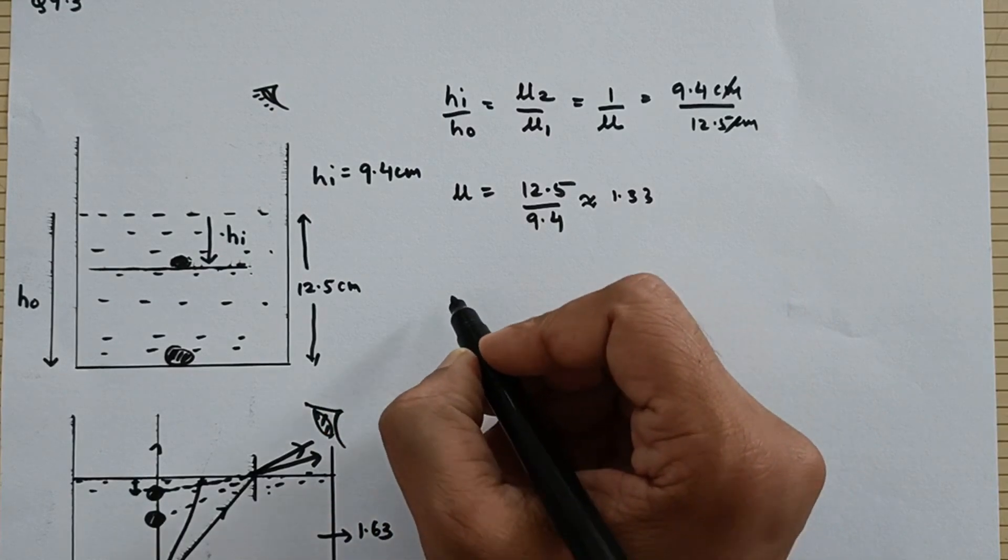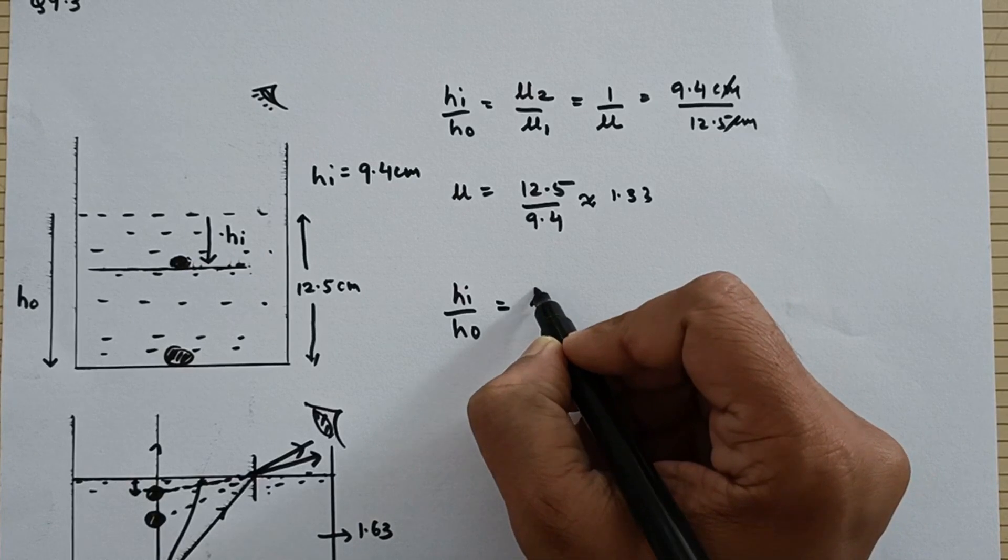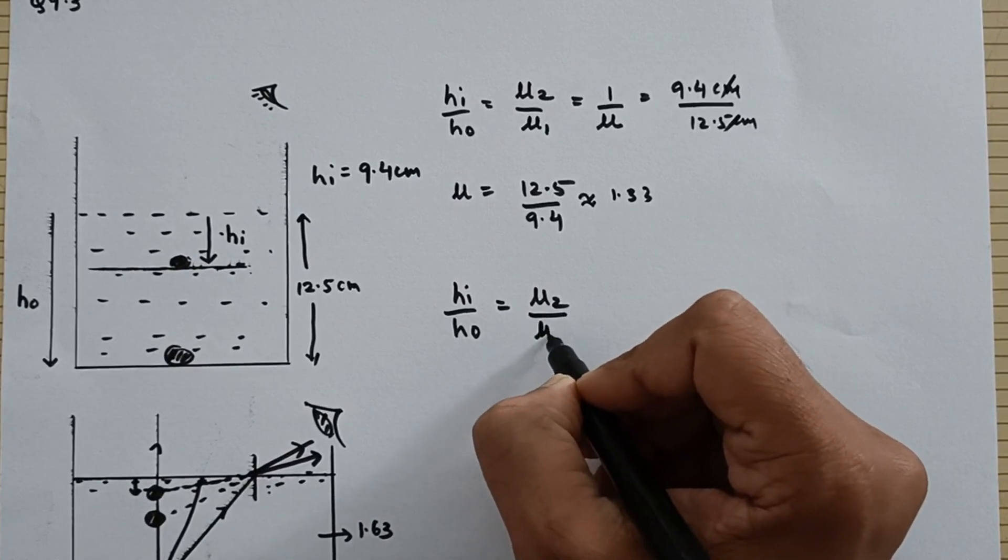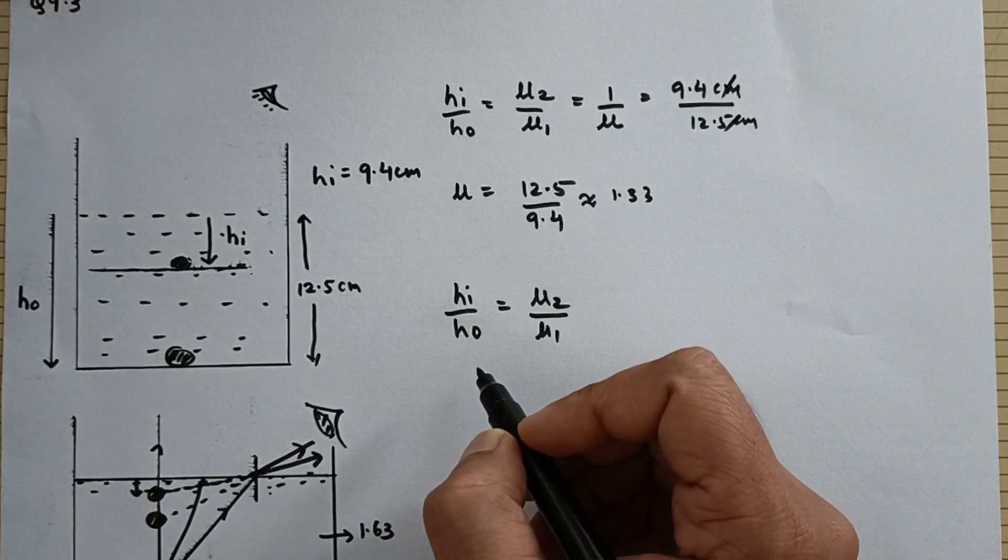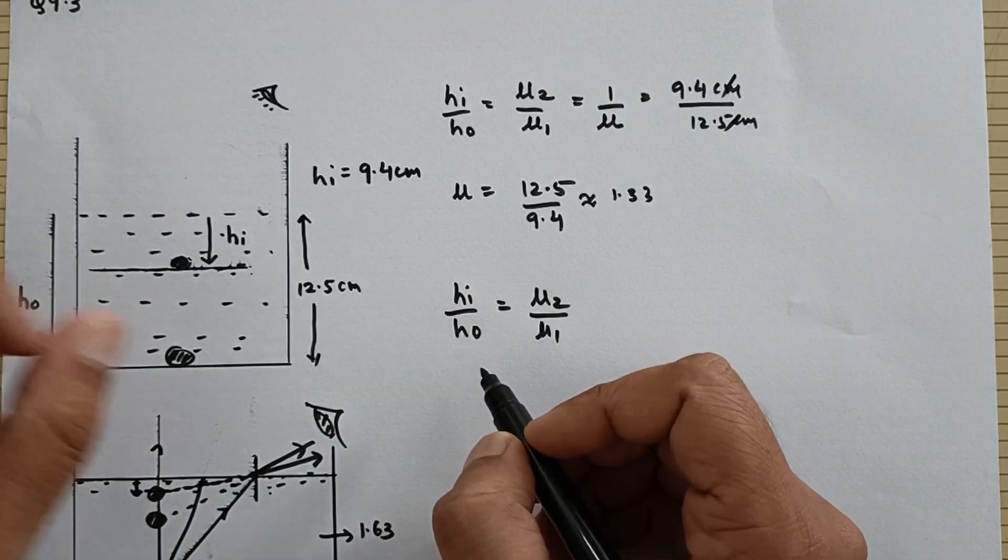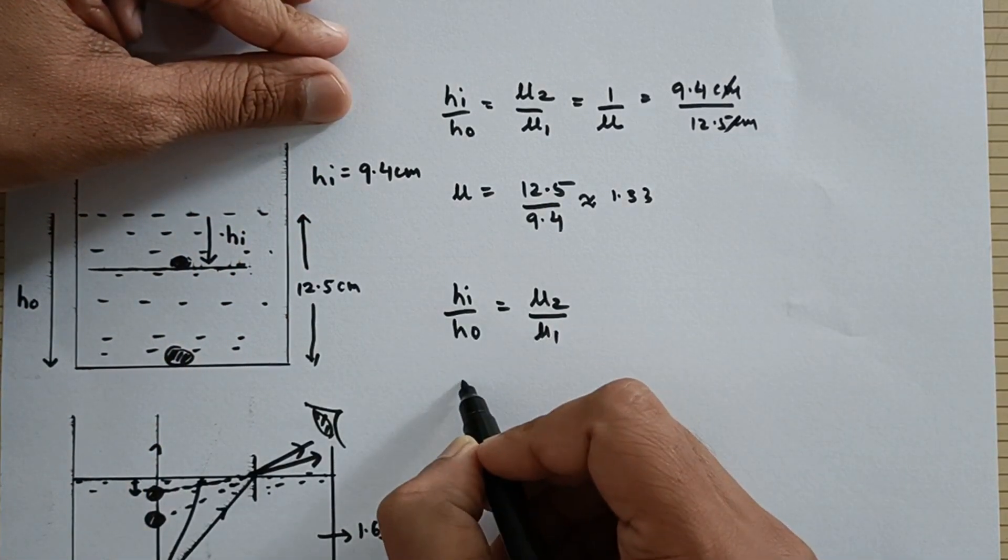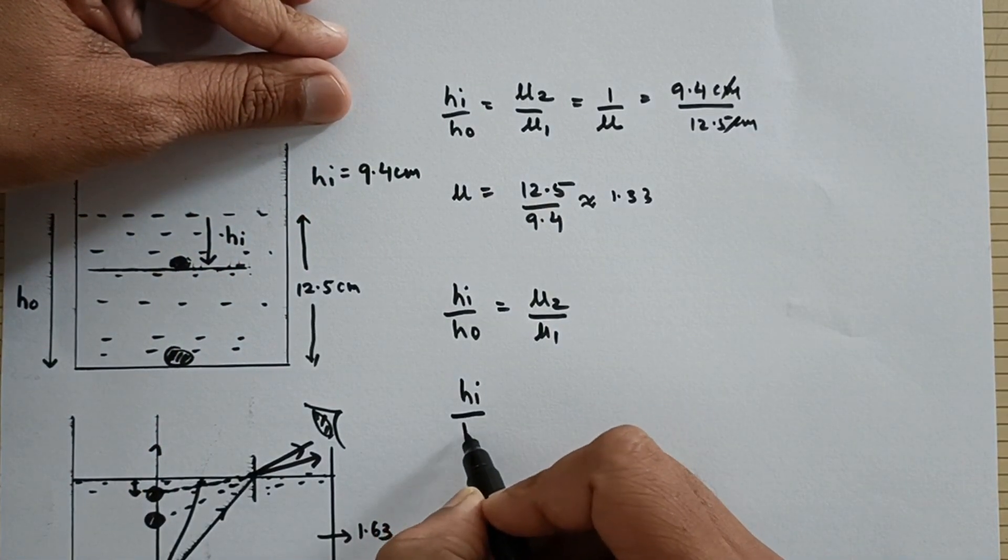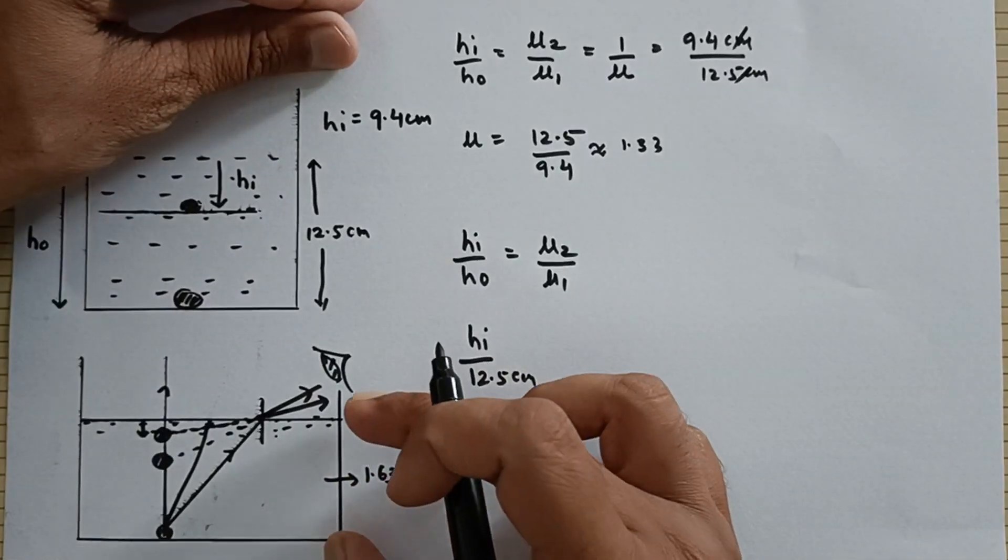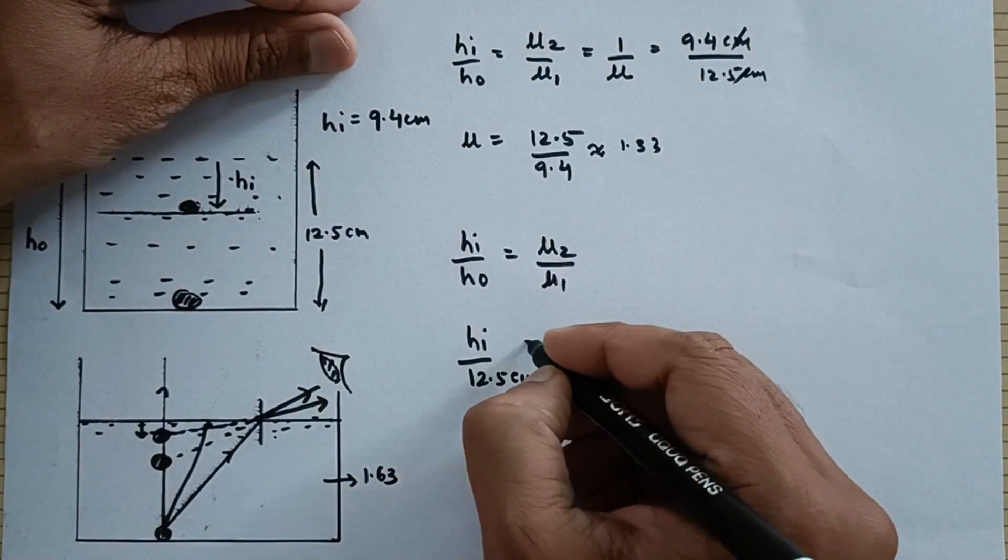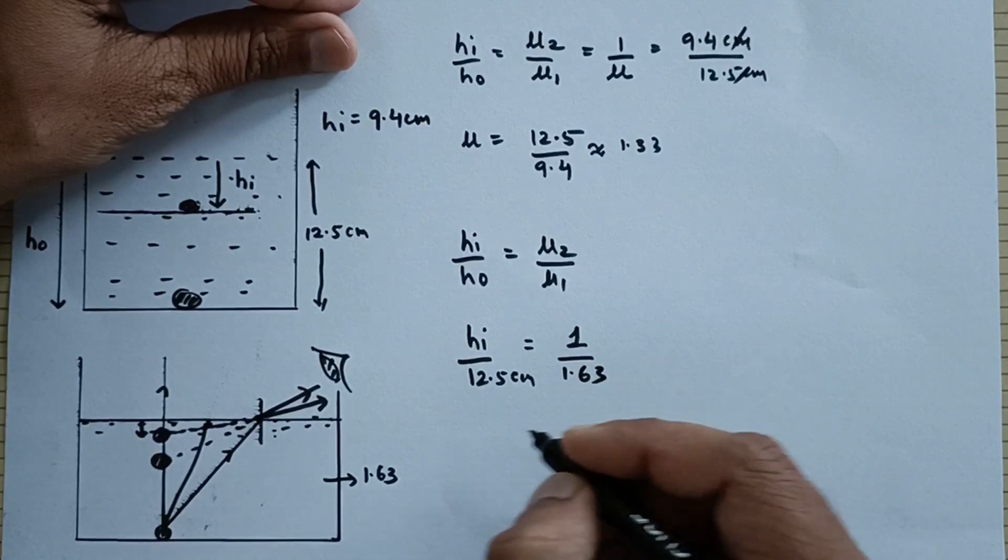The same formula we are going to apply that is HI upon HO that is equal to refractive index of medium 2 upon refractive index of medium 1. Now we are supposed to find HI so HI would be equal to HO upon mu that is 12.5 centimeters because the height of the bottom with respect to the top surface remains the same. Of course this is 1 and then this becomes 1.63.